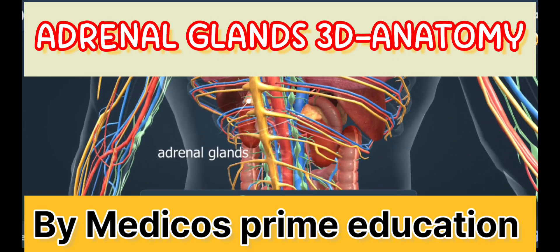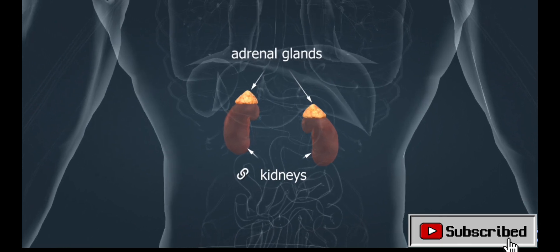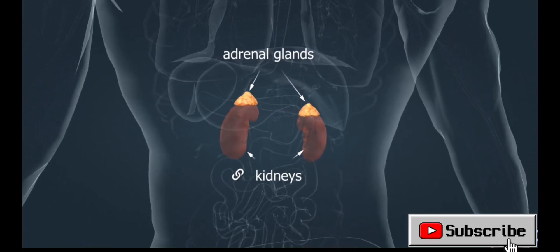The adrenal glands are among the most important glands in the human endocrine system. They are located above the kidneys. In adults, they weigh a mere 4 to 5 grams.